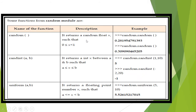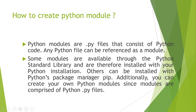In the random module, we will cover random, randint, and randrange. Random gives any value between 0 and 1. Randint includes both a and b and returns any value between them. Randrange excludes the outer boundary, returning any value from a up to one less than b.